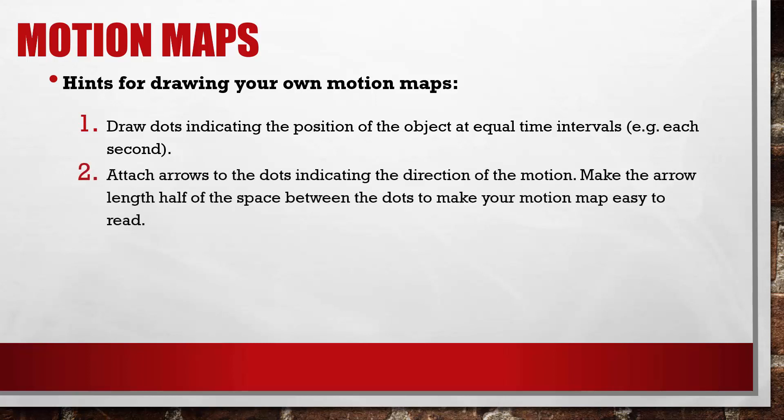Second, attach arrows to the dots indicating the direction of motion. Make the arrow length half of the space between the dots to make your motion map easy to read.